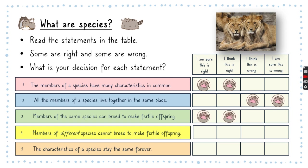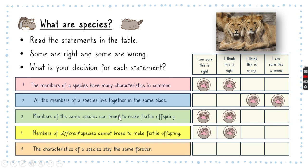Statement three: members of the same species can breed to make fertile offspring — this is definitely correct. If you are a member of the same species you can breed, and fertile offspring just means they can make a baby that is alive and healthy. Statement four: members of different species cannot breed to make fertile offspring — the answer is 'I'm sure this is right' because different species should not be able to breed to make fertile offspring.